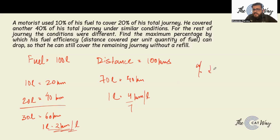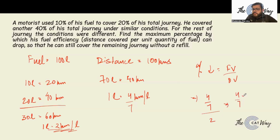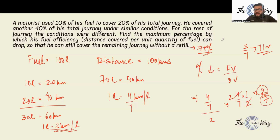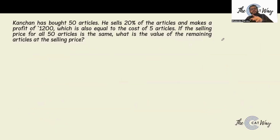Percentage decrease is calculated as final value divided by original value. My final value is 4 by 7, original value is 2, so this becomes 4 by 7 multiplied by 1 by 2, which is 2 by 7. My initial value was 2, final value is 2 by 7, so I am getting a loss of 5 by 7. One-seventh is roughly 14%, so 5 by 7 is roughly 71%. The correct answer is 71%.